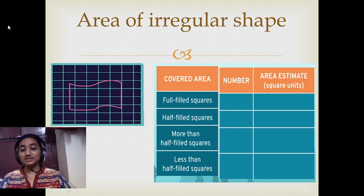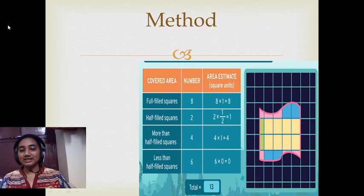The first thing we have to do is count the squares and give the numbering. To find the area: for completely filled squares and more than half filled squares, multiply with 1. For half filled squares, multiply with 1 by 2. For less than half filled squares, multiply with 0. On adding all of them, we get the total area of that irregular shape.